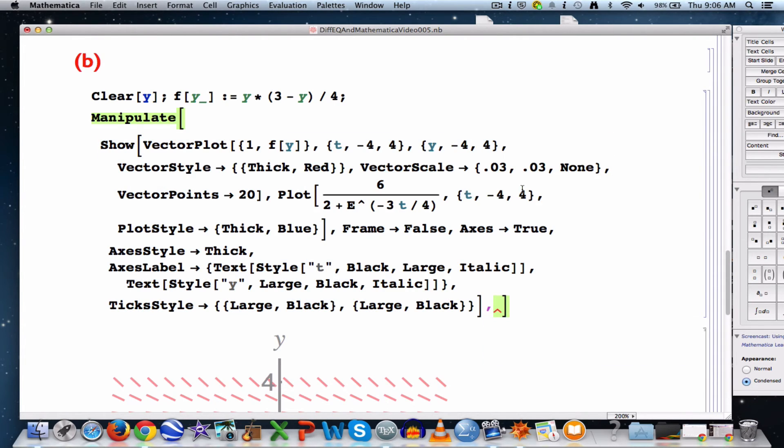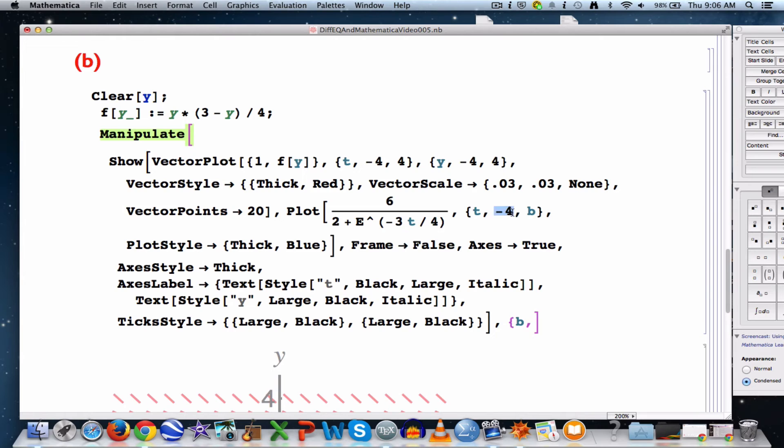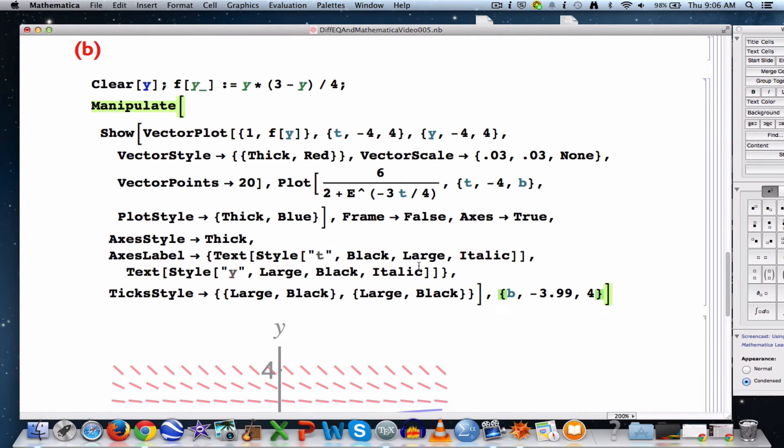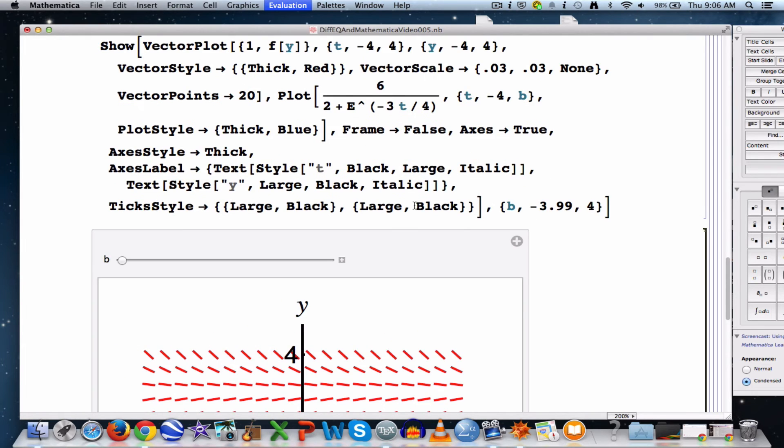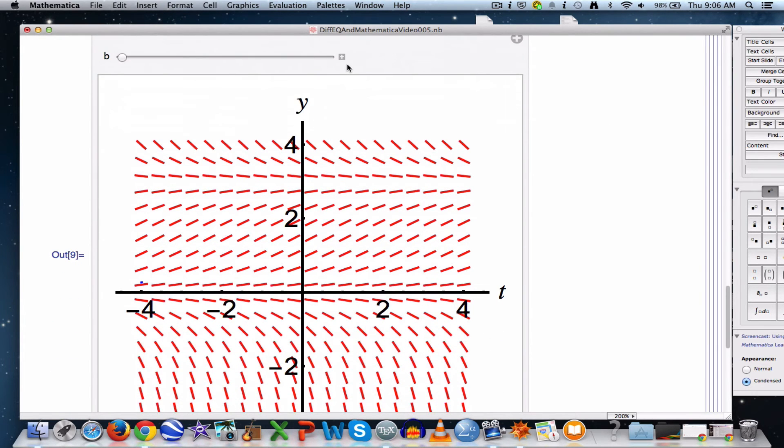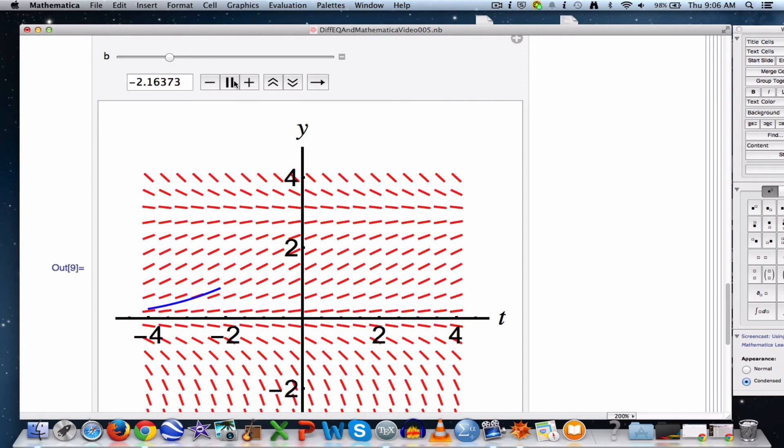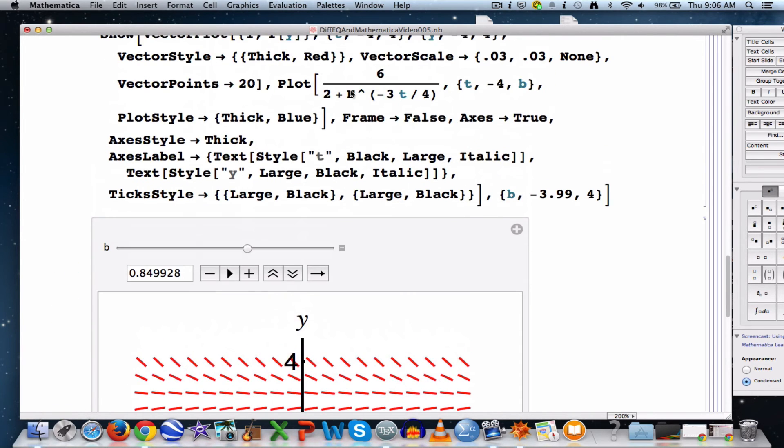What do I want to animate? One thing I want to animate is the right endpoint of the interval I'm plotting over, I'll call it b again. Start b just to the right of negative 4, like negative 3.99, and go up to positive 4. That will make an animation of the graph of this particular function as t increases. Let's watch it. There we go, there's the right endpoint. b is the animation parameter that's changing, so we're seeing different graphs stitched together to see that graph change as t increases.